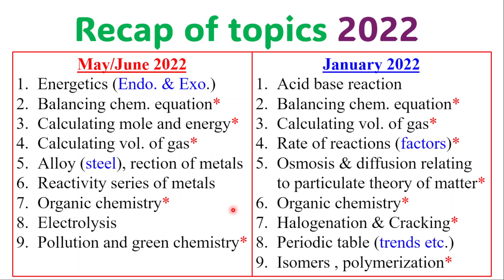For January 2022: acid-base reactions, balancing chemical equations — again, it appears on both papers — calculating volume of gas, rates of reaction, factors affecting rate of reaction, which are common topics. Osmosis and diffusion as relating to particulate theory of matter. Organic chemistry again, and halogenation and cracking — cracking is the one that frequently shows up. Also the periodic table and trends of the periodic table, isomers, and polymerization.